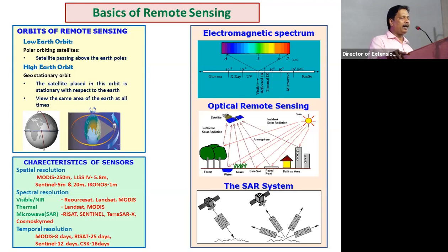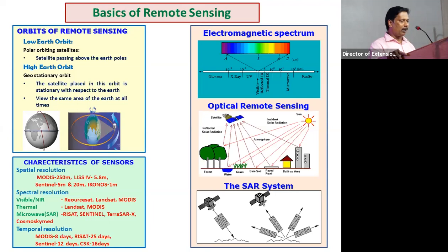There are two types of satellites. One is optical remote sensing, where we capture reflectance from sunlight using sensors. This can only be done during daytime, and whenever there is cloud cover, we cannot use it — the clouds appear in images and we cannot derive information about crops below. For agriculture monitoring, most operations are during the monsoon season, so the cropping season is mostly covered with clouds, limiting optical remote sensing applications.